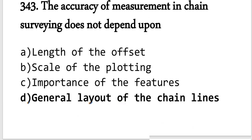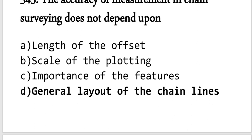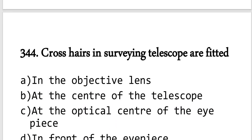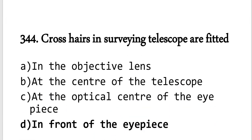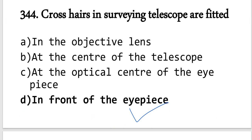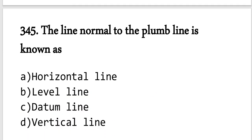Question number 343: The accuracy of measurements in chain surveying does not depend on the crosshairs in the telescope. Crosshairs are fitted in the eyepiece of a theodolite or dumpy level, and they are located at the eyepiece, not the objective lens. The option related to crosshairs at the objective lens is incorrect.